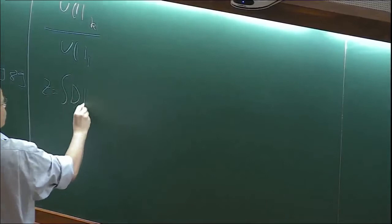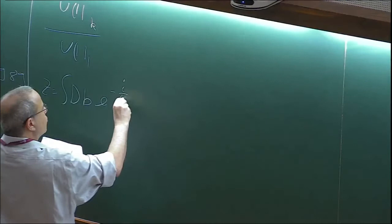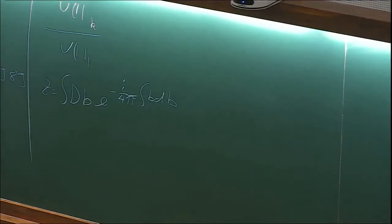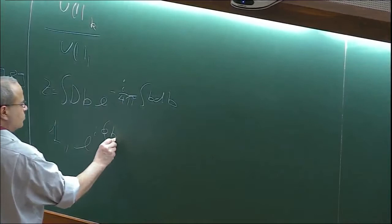So we have a partition function which is a path integral over all possible gauge fields, and we have e to the minus i over 4π, integral BdB. If you recall the discussion from yesterday, the level is odd, so there are only two. This is a spin theory. It has two line operators: an identity operator and another one, which is a transparent spin-1/2 line. There is a charge-one line.